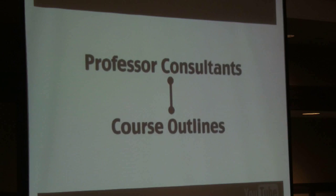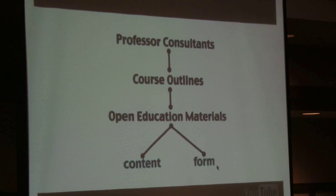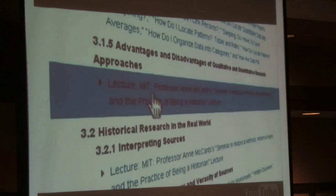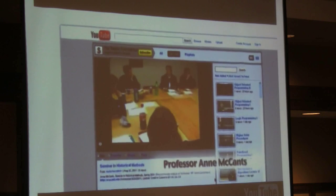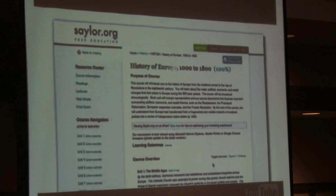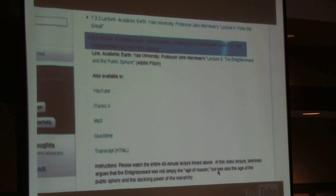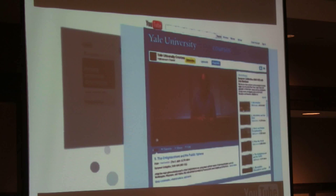Once a course outline is created, our professor consultants search for and vet open education materials from the various content creators in the higher ed landscape, matching content and form to build a dynamic learning environment for students. For example, in History 104, Historical Methodology: The Art and Craft of the Historian, our professor consultant Dr. Benjamin Schwantes has incorporated a wonderful openly licensed lecture from MIT — A Seminar in Historical Methods, by Professor Anne McGrath. Similarly, in History 201, The History of Europe from 1000 to 1800, our professor consultant has decided to include an openly licensed Yale lecture, The Enlightenment and the Public Sphere, by Professor John Merriman. A great lecture, but now it's connected to a larger learning landscape that students can access in one place, sailor.org.